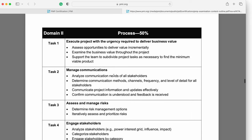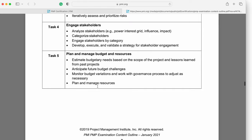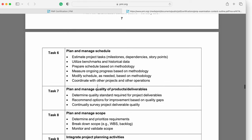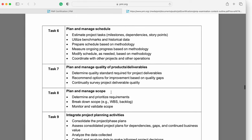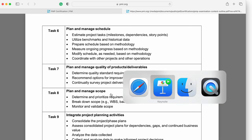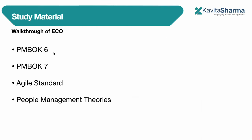Looking at the process section of ECO, it covers how to manage communication, risk, stakeholders, budget, resources, and schedule — most of the things which are in PMBOK 6. So PMBOK 6 becomes very important if you are not going with an instructor or if you are doing self-study.